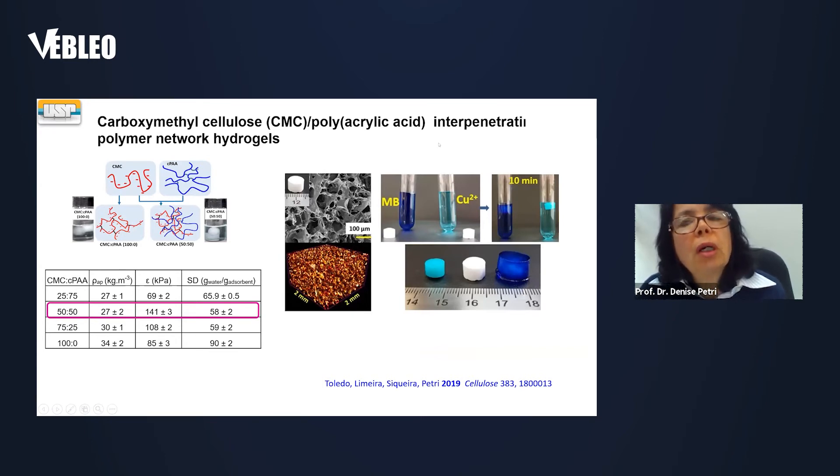We can also construct interpenetrating polymer networks that work as hydrogels. In this case, it was carboxymethyl cellulose with polyacrylic acid. And it was very nice because in a ratio one to one, they achieved very interesting Young's modulus, so they became stiffer and resistant. And also, they could remove copper ions from effluents and dyes as methylene blue.